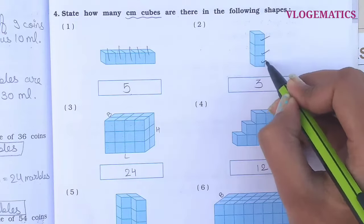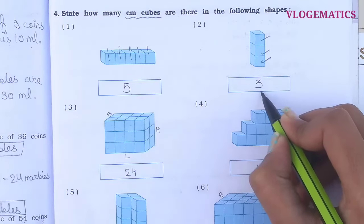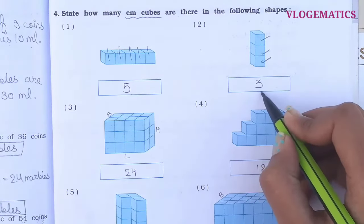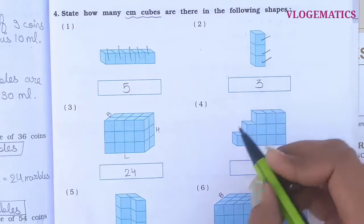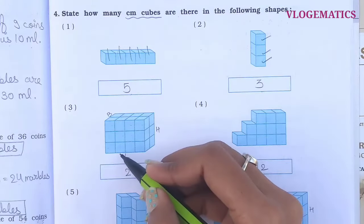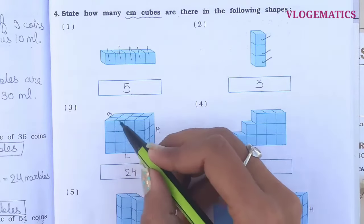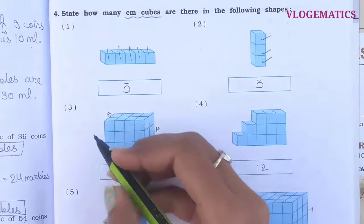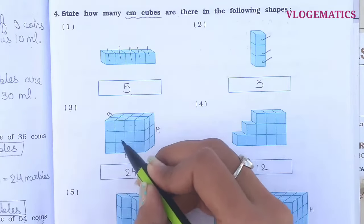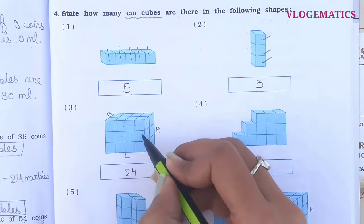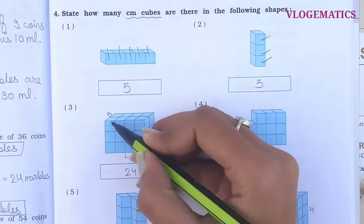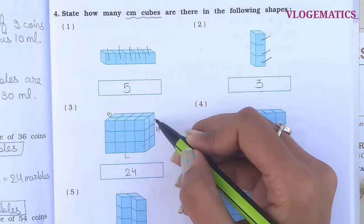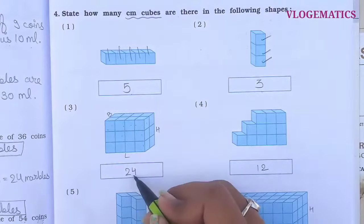For shape 3, we can count the cubes from the given figure: 1, 2, 3, 4, 5, 6, 7, 8, 9, 10, 11, 12 — so 12 cubes are in front of us.